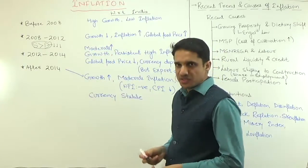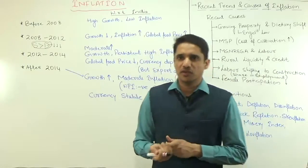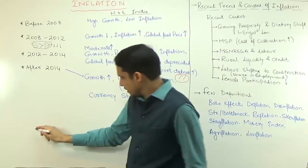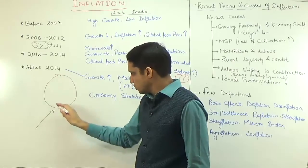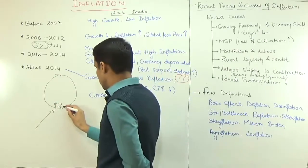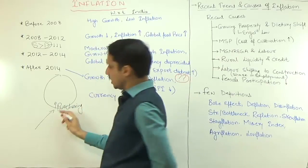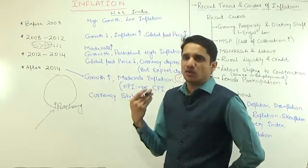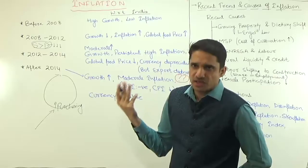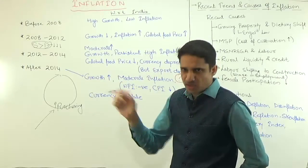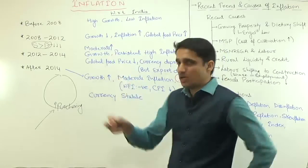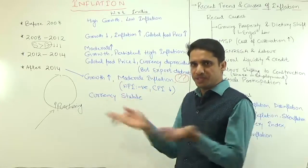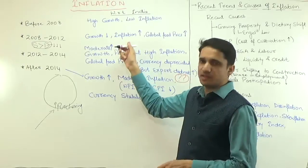To overcome recession, following the Keynesian theory, you have to increase the purchasing power of society. The tools can be different: quantitative easing adopted by the USA, European countries, and Japan. In India, a similar approach was adopted through MGNREGA, which increased liquidity in rural areas. To overcome recession you have to increase money supply, and when money supply increases, that causes inflation in the economy.